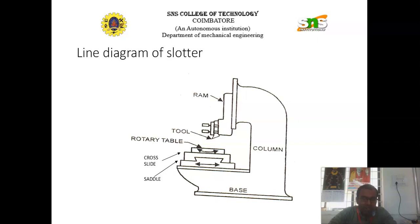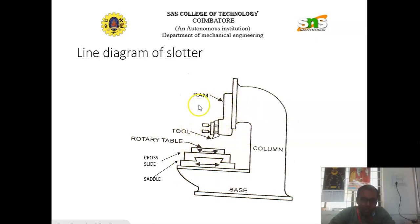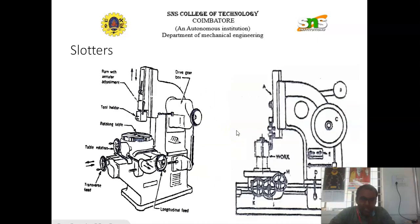Some of the main parts of the slotter are RAM. The RAM which is attached to the column and the base. Above the base, the sandal is fitted. With the help of the sandal, the cross plate is fitted and the rotary table is fitted. In front of the RAM, tool and tool post is fitted. This is the simple line diagram of the slotter.